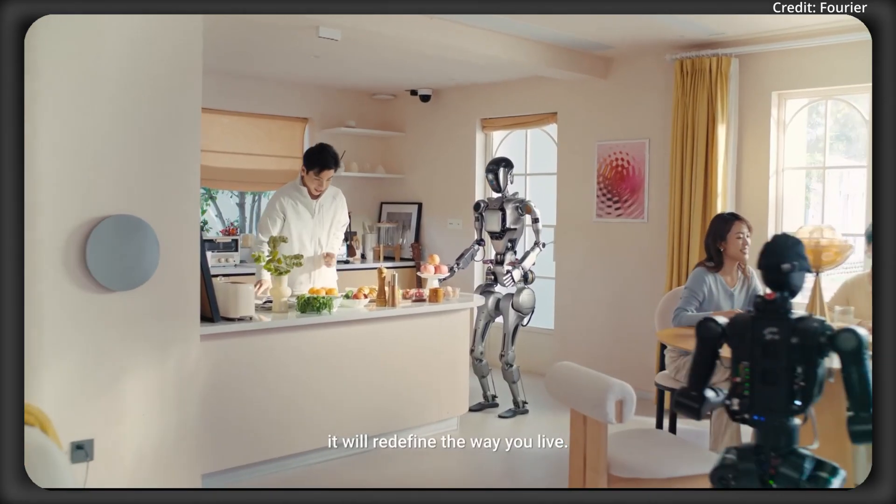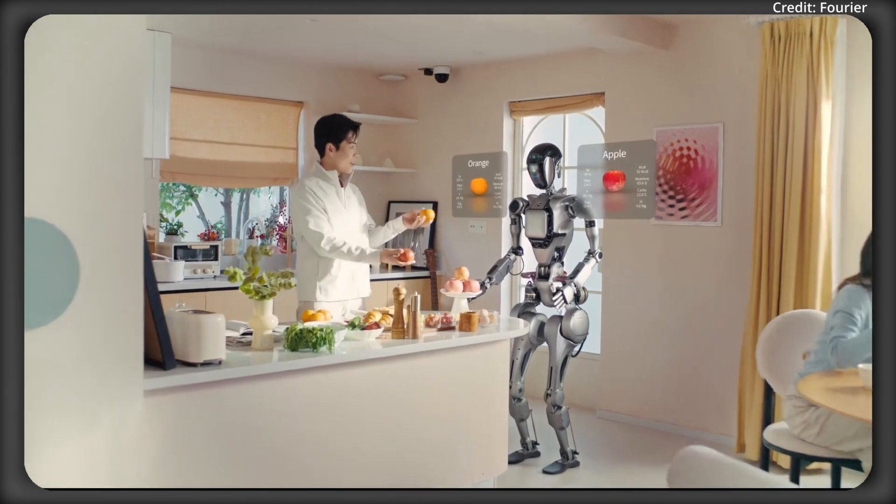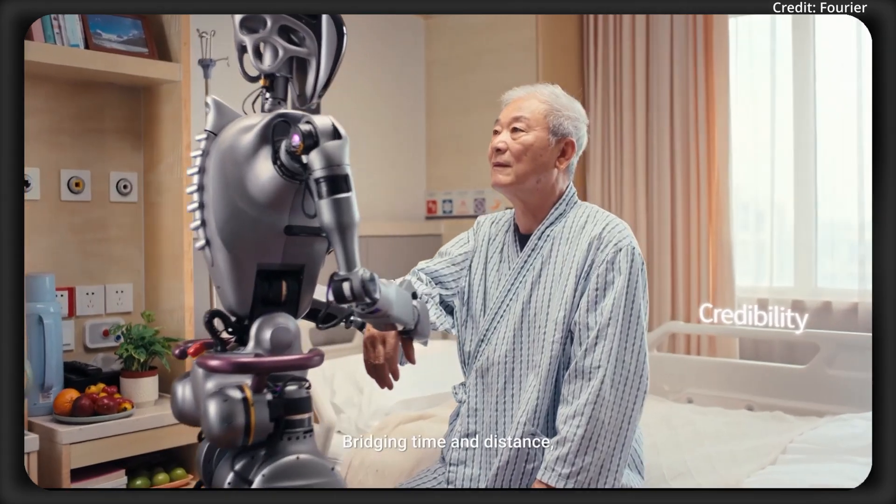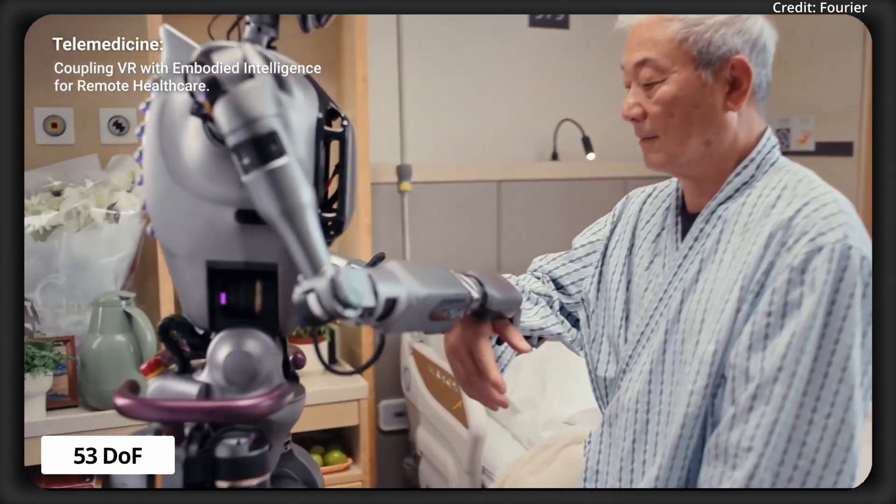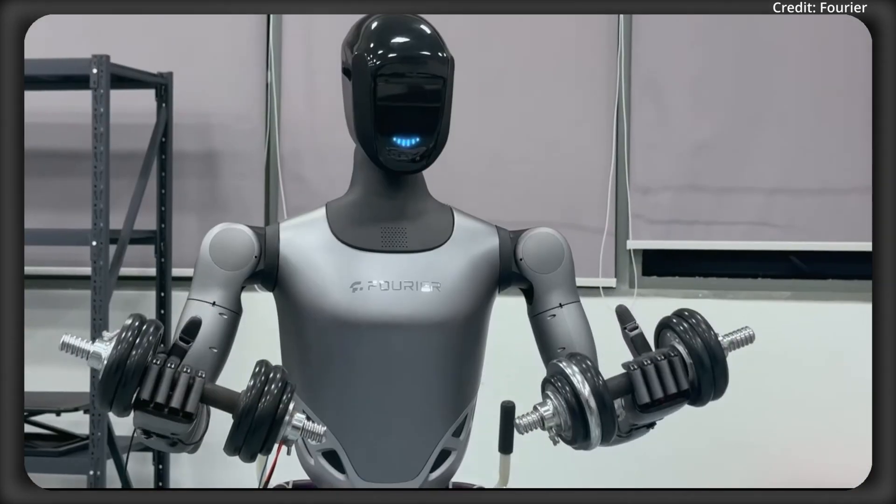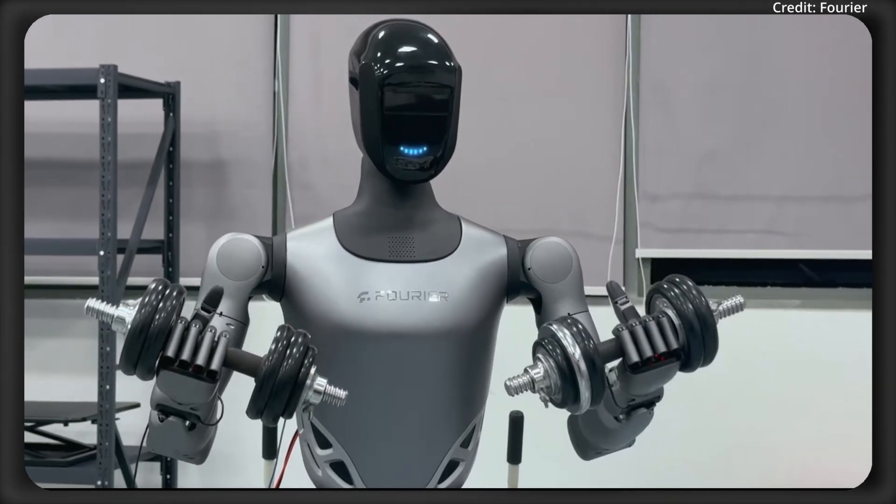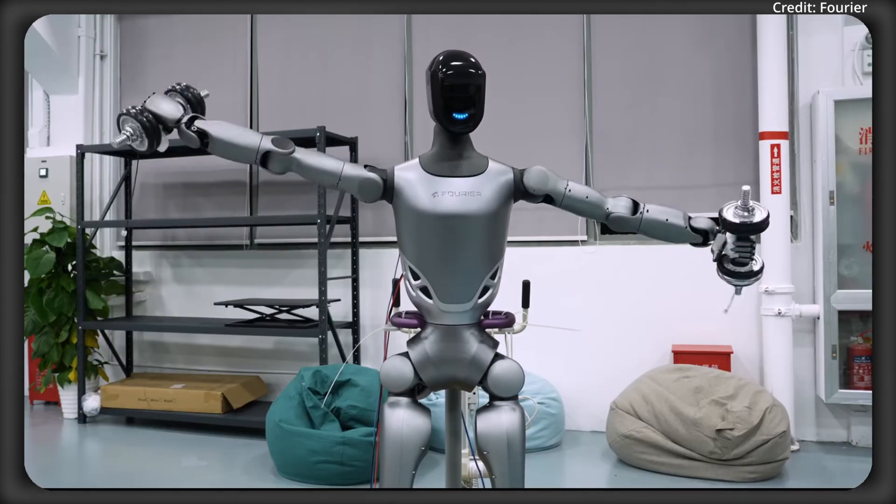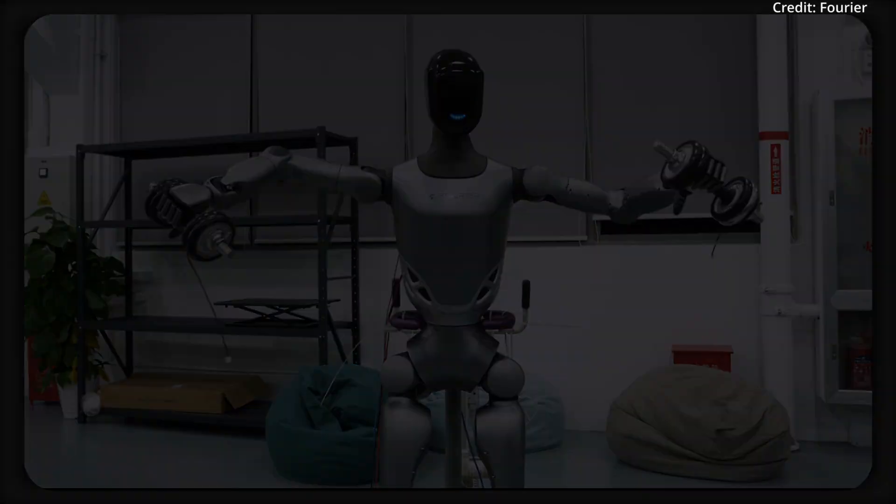Starting with its GR2 Humanoid, which stands at 175 centimeters and weighs 63 kilograms, and it features an impressive 53 degrees of freedom in total, which allows for smoother, more natural, human-like motions. And for real-world tasks, the GR2 has a payload of up to 3 kilograms in each arm, and this is to handle tasks like object sorting more effectively, and this broadens its practical applications.